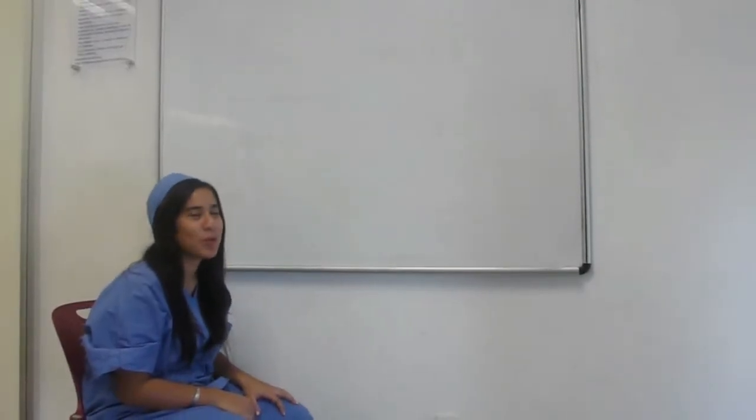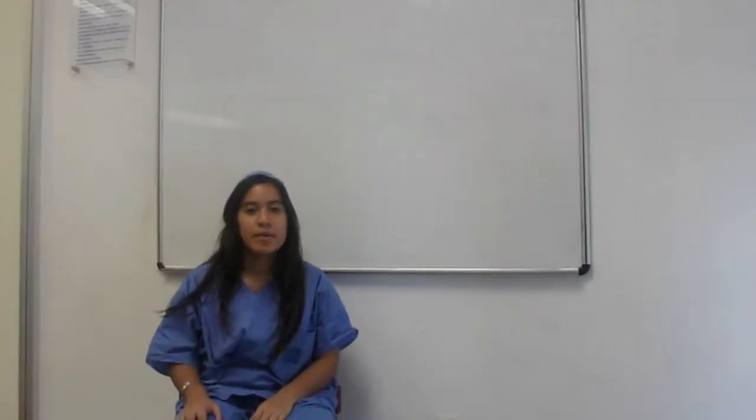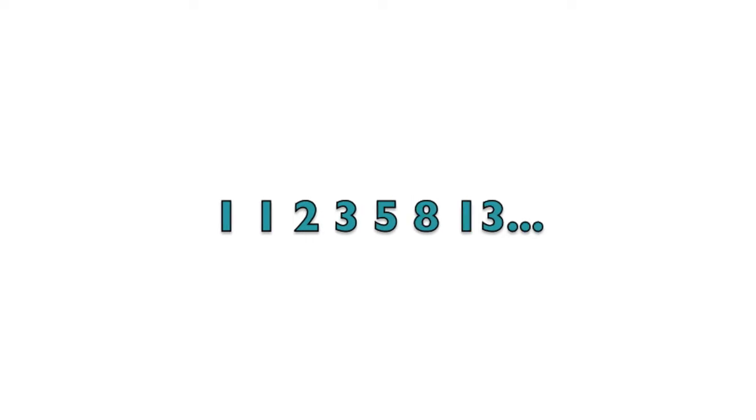Well, normal numbers go 1, 2, 3, 4, 5, 6, 7, and so on. But the Fibonacci series says that 1 is followed by 1, 2, 3, 5, 8, 13, and so on.